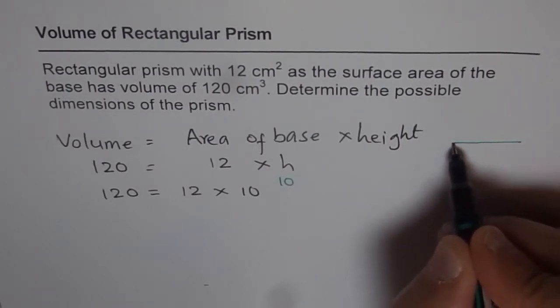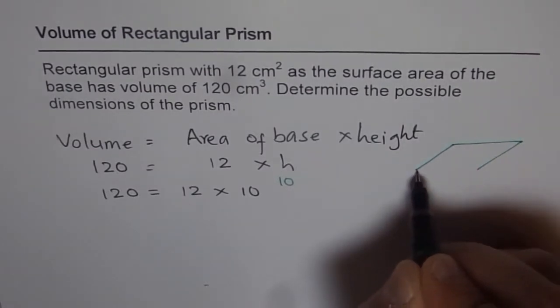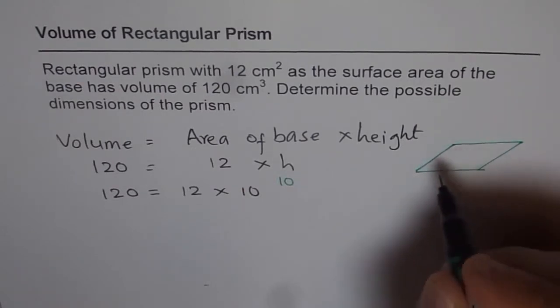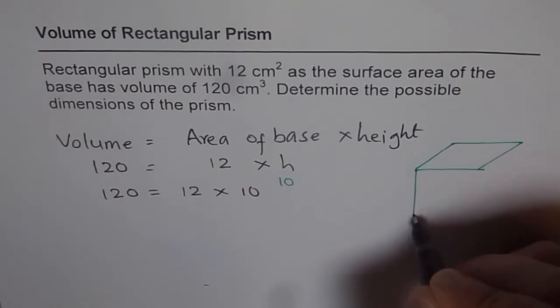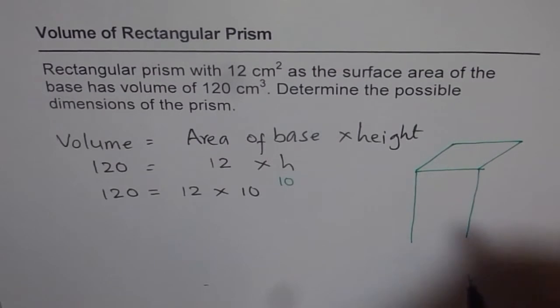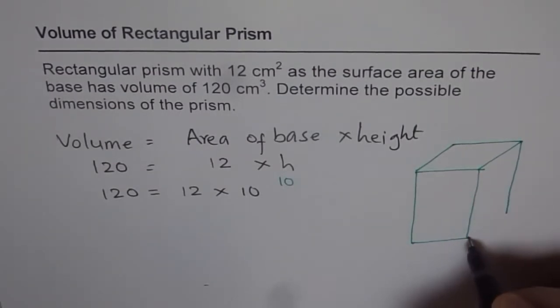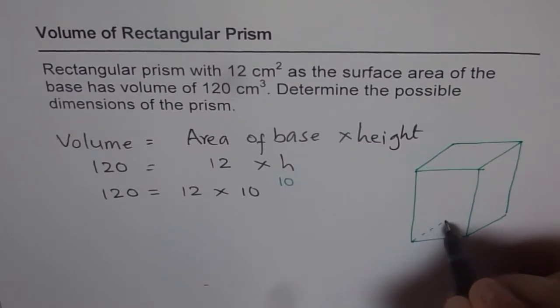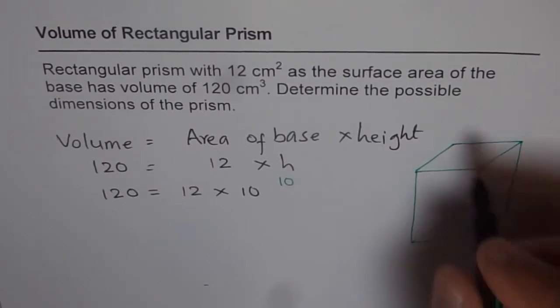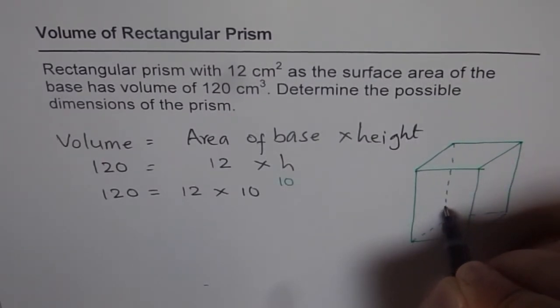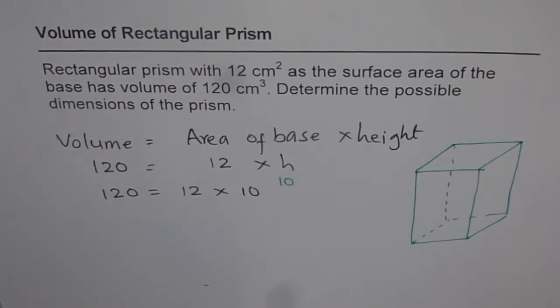What we are given is a rectangular prism. Let me make one here. So we have a prism, the top, and then we make the height, and then make another rectangular prism here. And then that's how we complete it. Three-dimensional figure with six faces and eight corners.